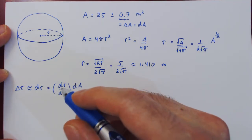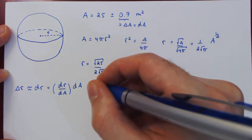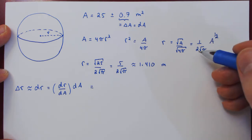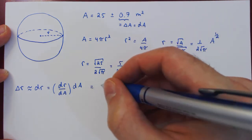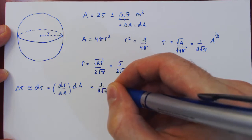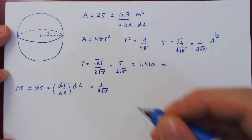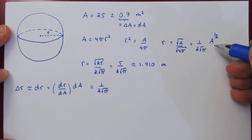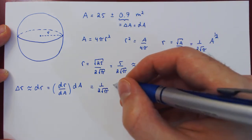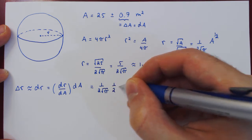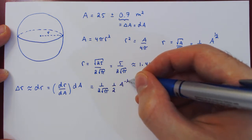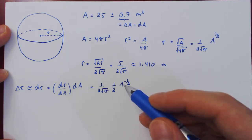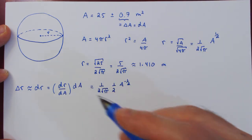We now have to differentiate R with respect to A. The factor 1 over 2√π is a constant multiple, so it stays in the derivative. By the power rule, the derivative of A to the one-half gives one-half times A to the negative one-half, giving us dR/dA times dA.